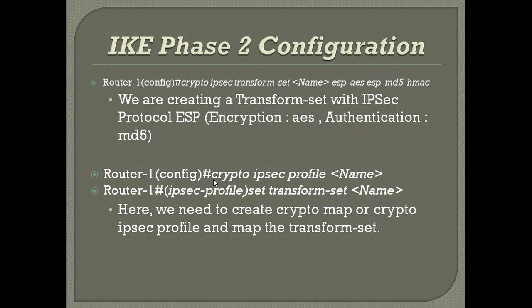If you need to create a crypto map, there are certain criteria. A peer must be correctly configured, an access list is a must, and the transform set must also be configured. If any of these is missing, the crypto map will not come up. Additionally, if you have multiple peers, you need to configure a dynamic map and then reference it from the crypto map before assigning it to the concerned interface.